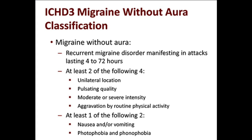The four features are: one-sided location, throbbing quality, moderate or severe intensity, and aggravated by routine physical activity. Additionally, at least 1 of the following 2 must be present: nausea, or dislike of light and noise. If the patient meets 2 out of 4 and 1 out of 2 criteria, with a normal exam, correct duration, and a stable pattern, the diagnosis is pretty secure.